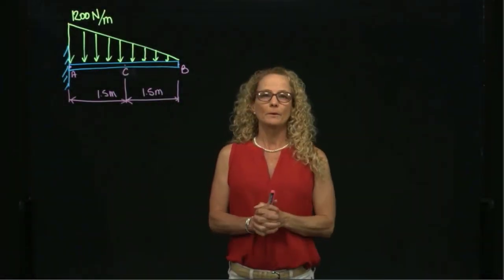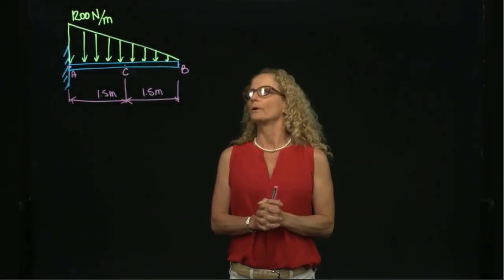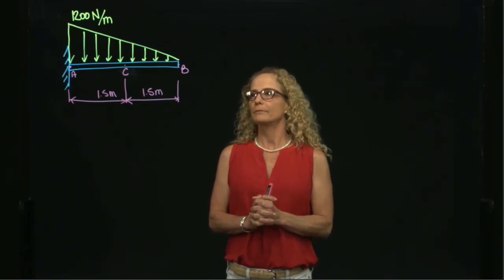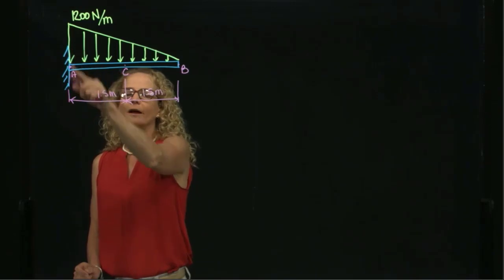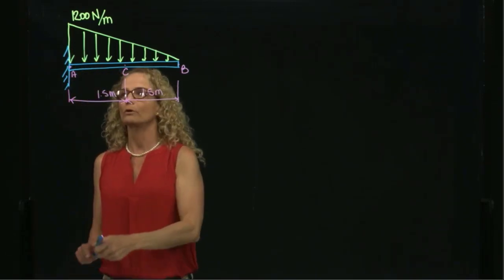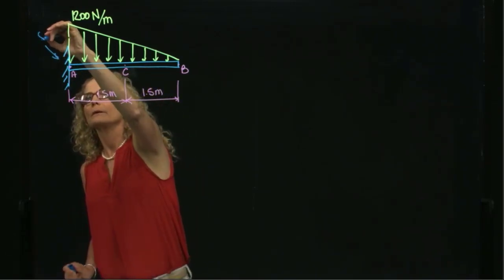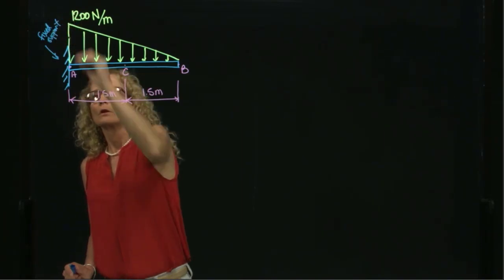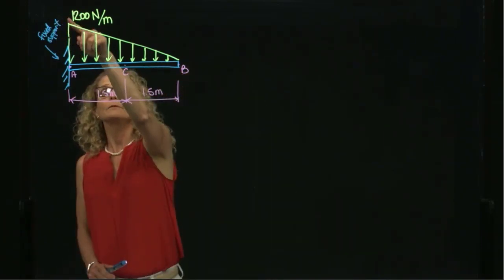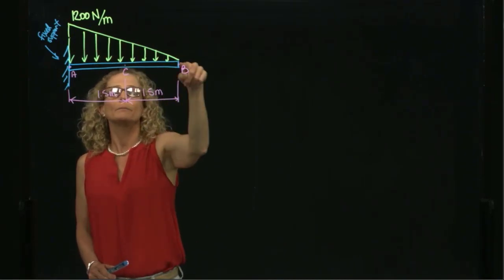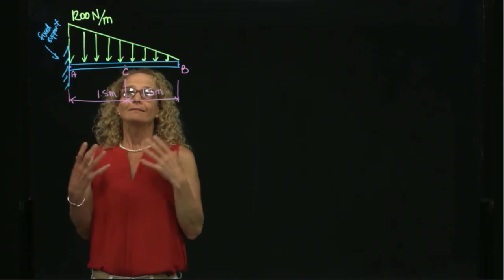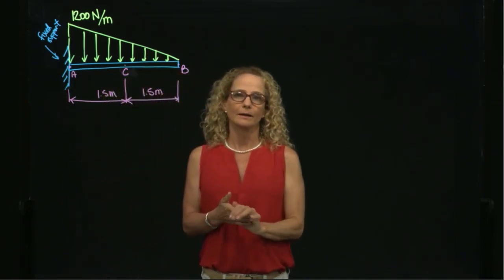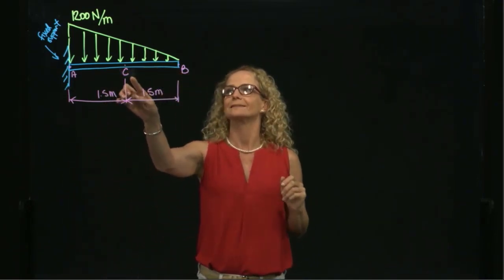This is problem 7.4. Here we have a cantilever beam AB that is attached at A by a fixed support. We have a distributed force applied to the beam, and we need to find the internal reactions at point C.